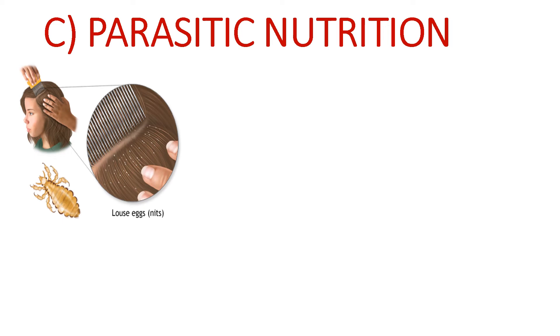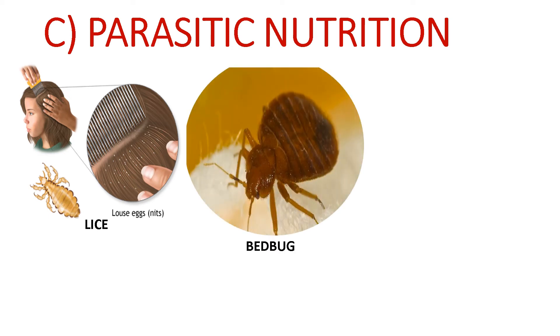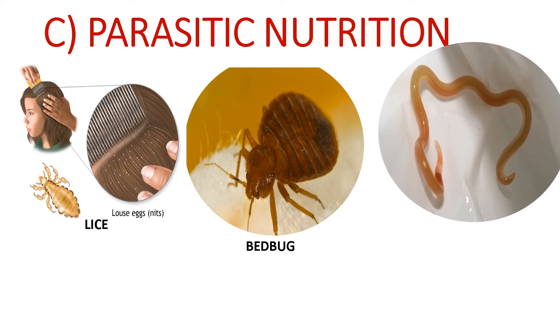Parasitic nutrition: animals that live in or on another organism (the host) and benefit themselves by sucking nutrients from the host are called parasites. In parasitic mode of nutrition, one organism is benefited while the other is harmed. For example, when humans have lice on their head, lice suck blood from the human head — lice is a parasite which is benefited and humans (the host) are harmed. Similarly, bed bugs suck blood from the animals on which they live. Roundworms suck nutrition from the human intestine, harming humans and benefiting themselves.